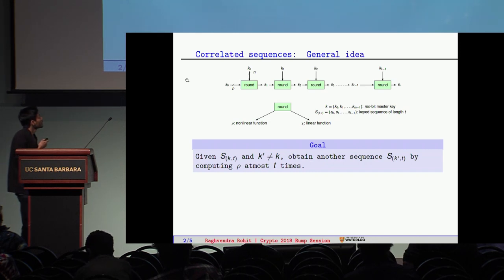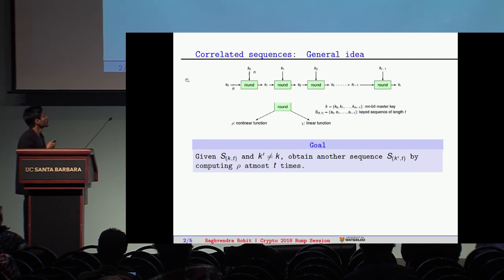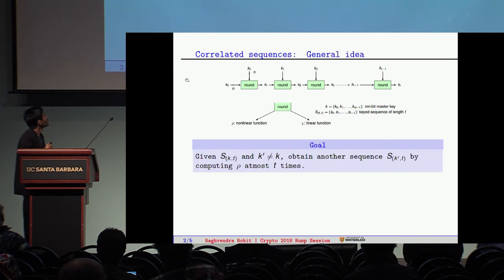If you consider the round, it is basically a composition of two. For instance, one is nonlinear and another is linear, and this requires majority of the computations. The goal is given a keyed sequence and another key which is not equal to K, obtain another sequence of the same length by computing the nonlinear function at most T times.